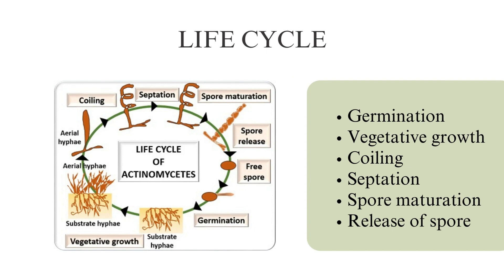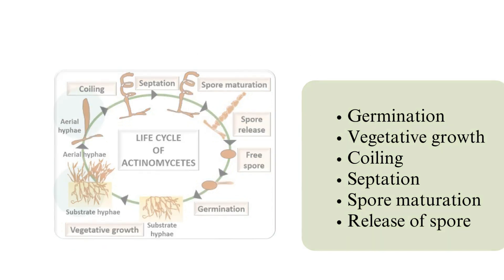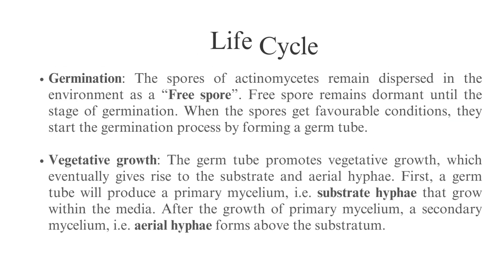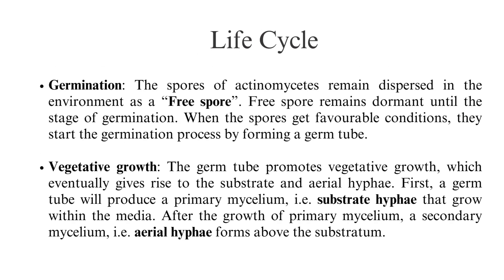The life cycle of actinomycetes is divided into six stages: germination, vegetative growth, coiling, septation, spore maturation, and release of spore.